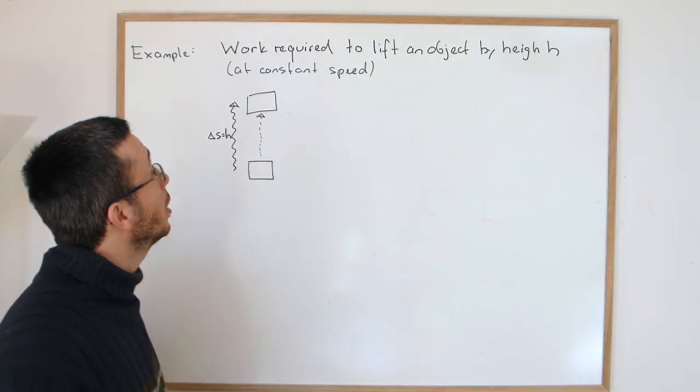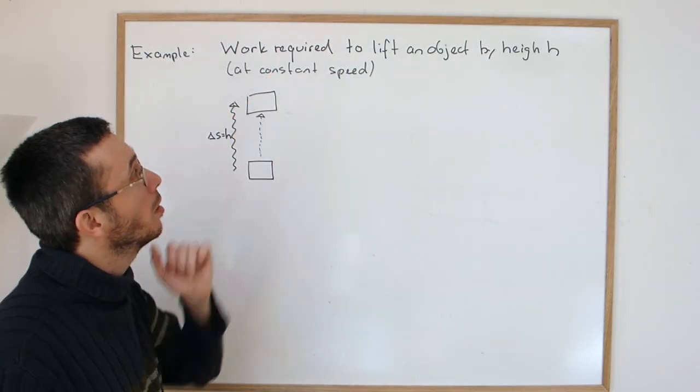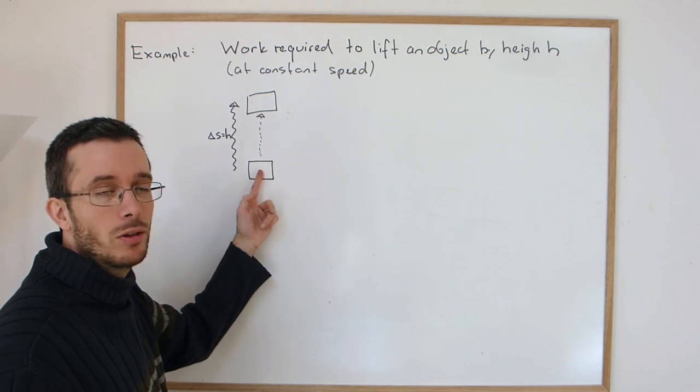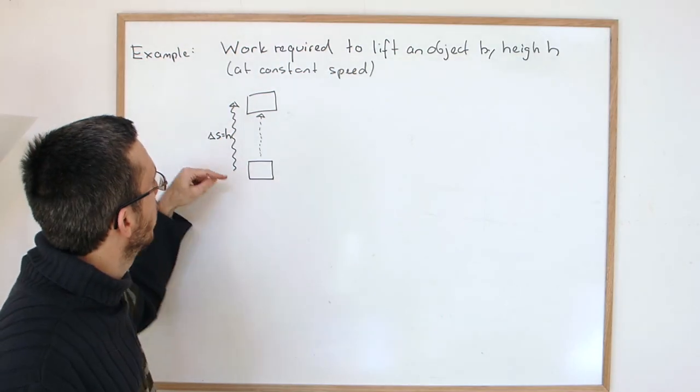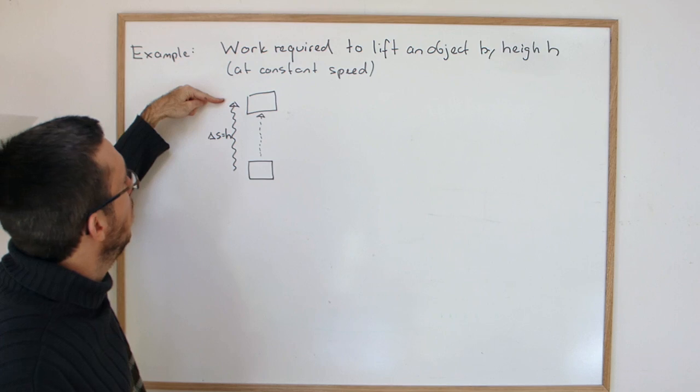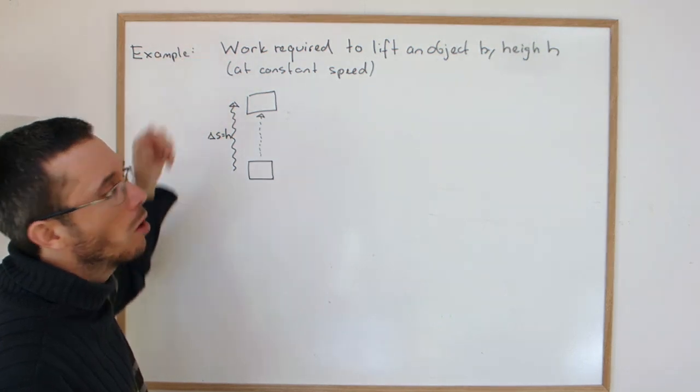In this example I'm going to find out how to calculate the work that is required to lift an object by a height h at a constant speed.